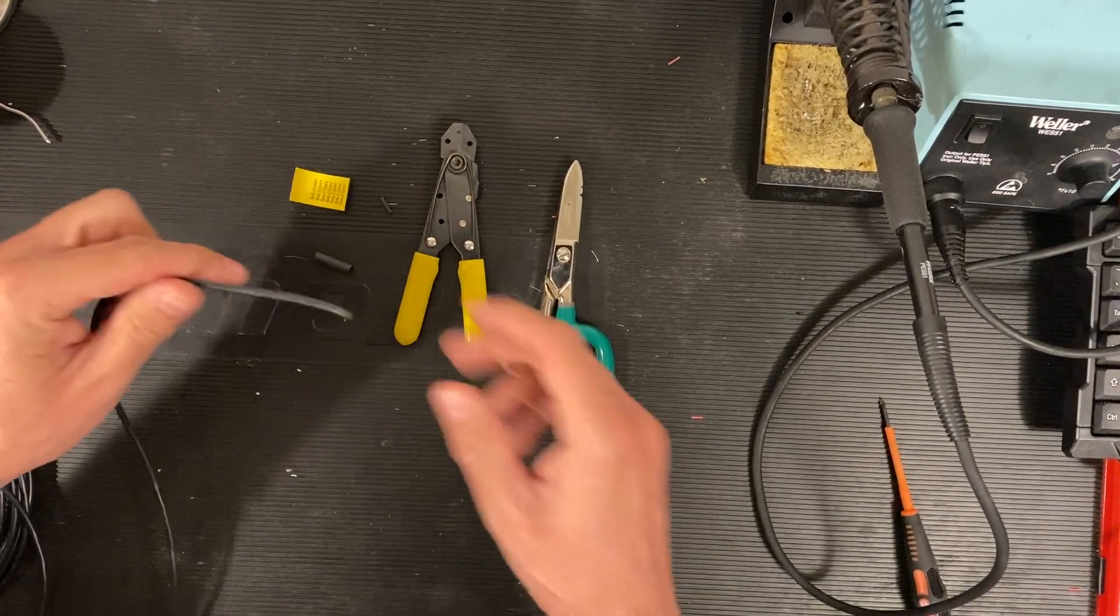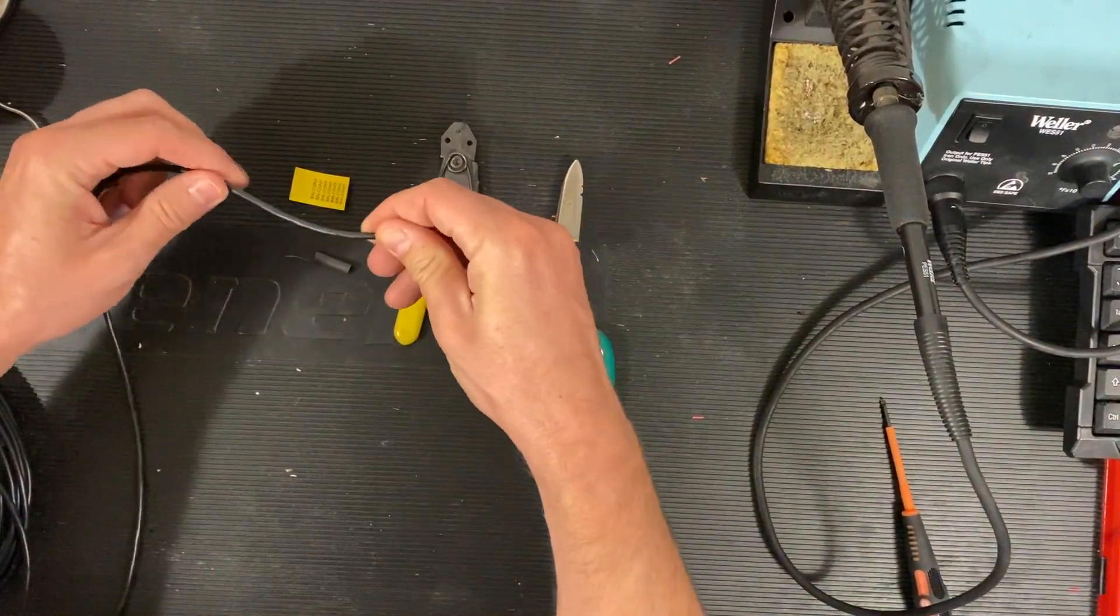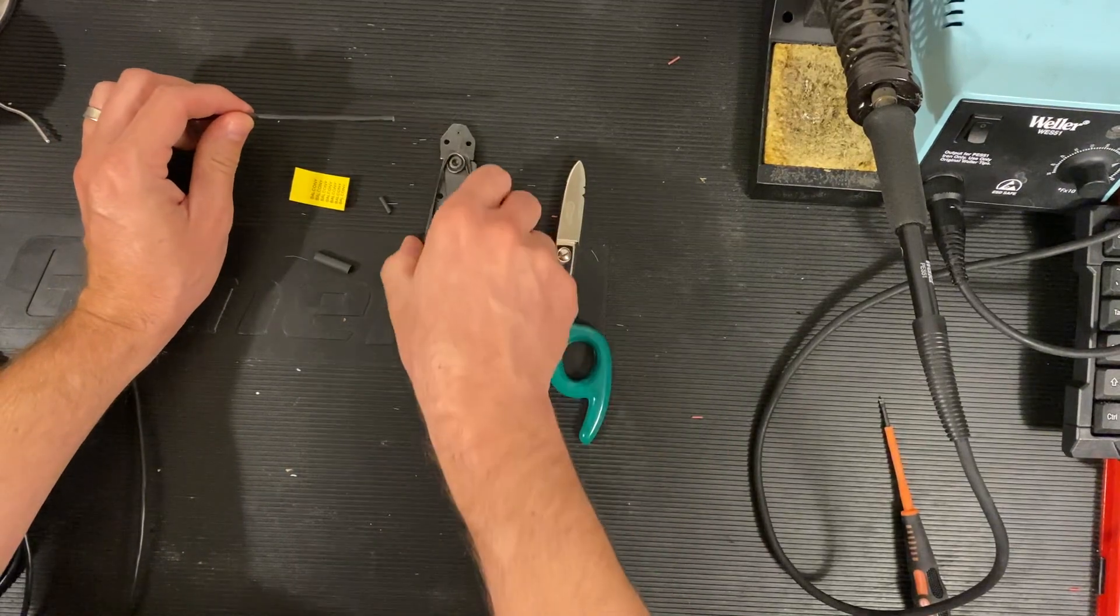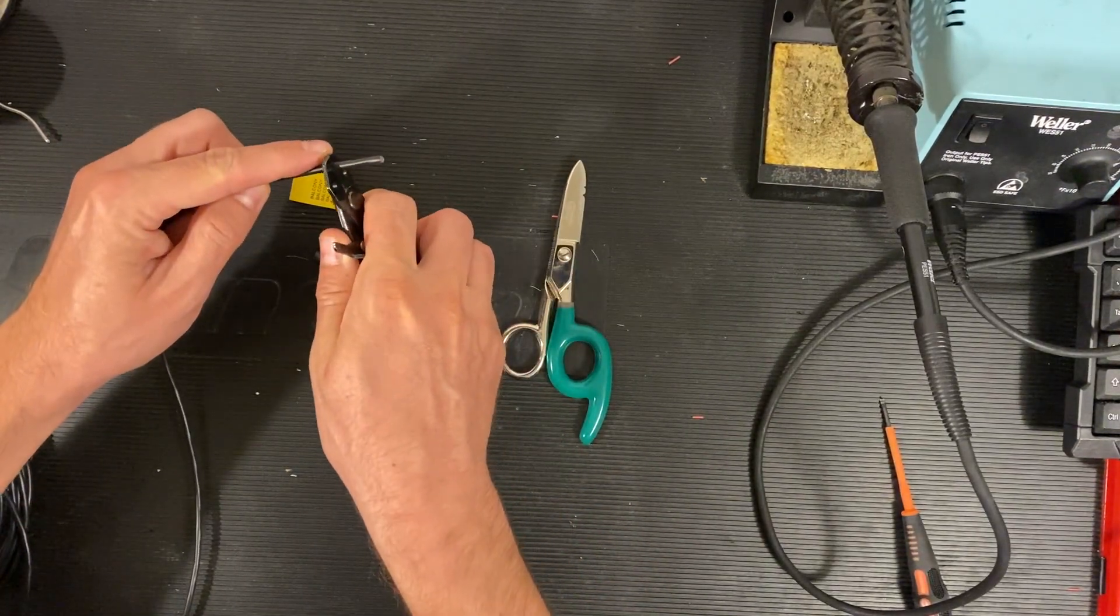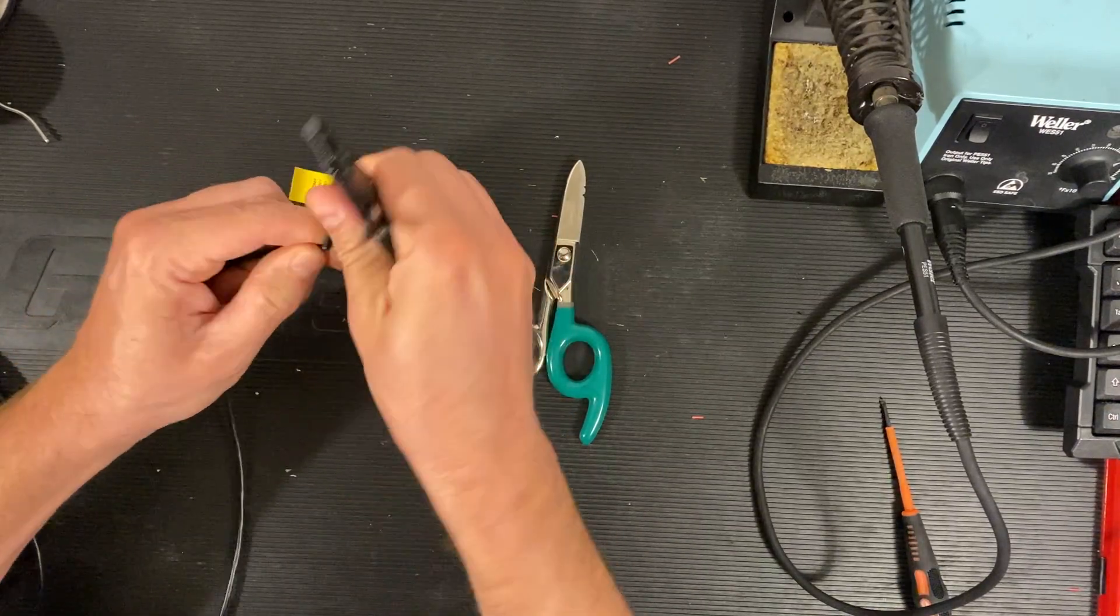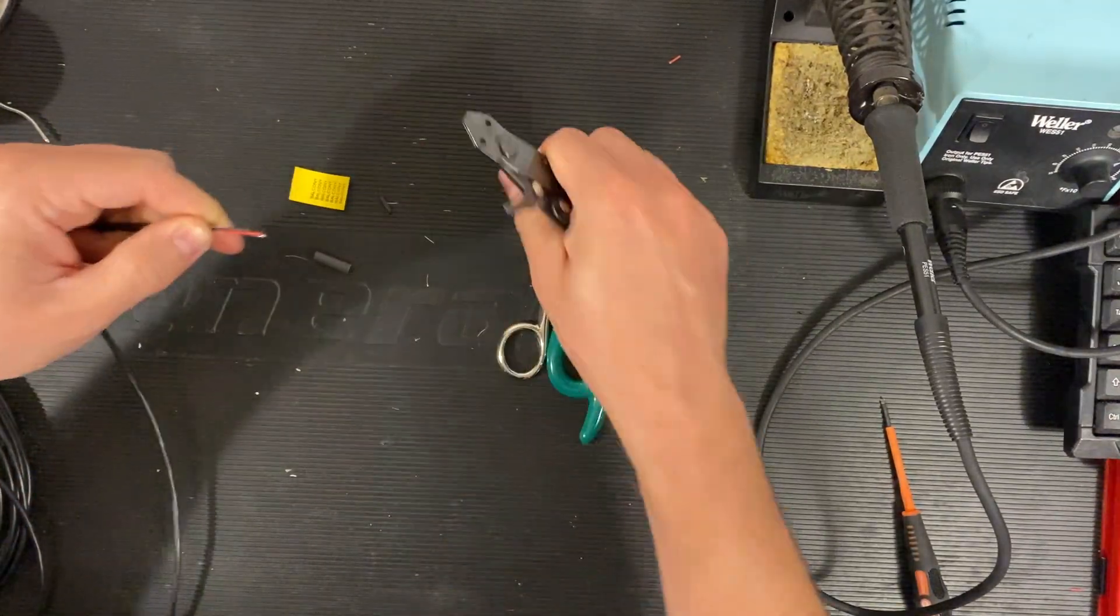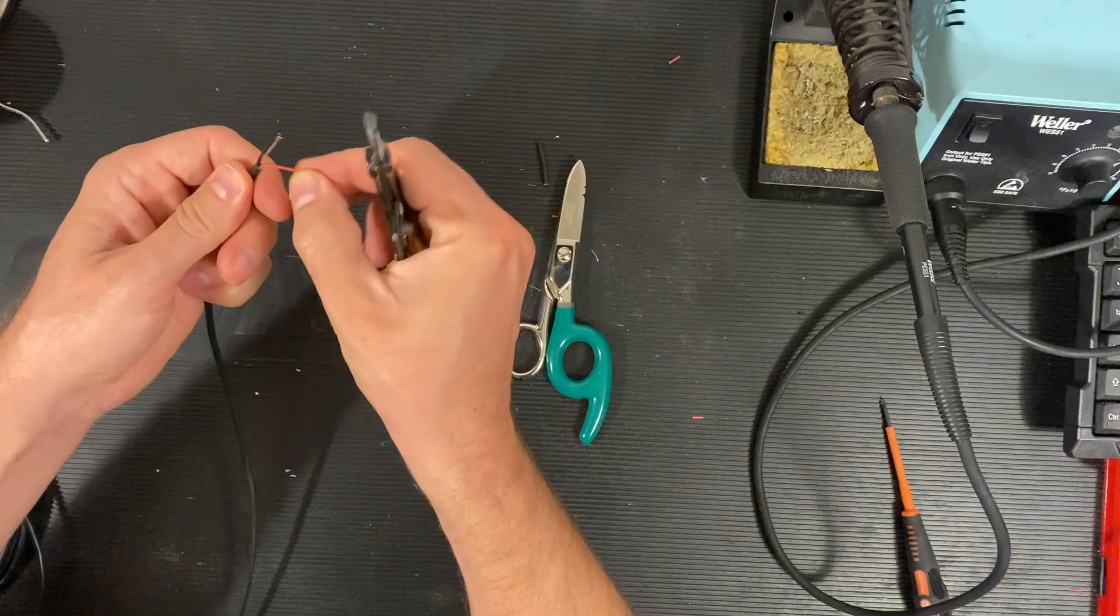Today I'm going to show you how we prepare our cable ends. The first thing we do is strip off about an inch of the outer jacket, exposing the three inner conductors.